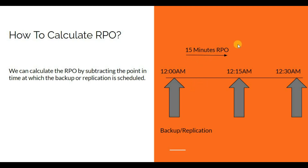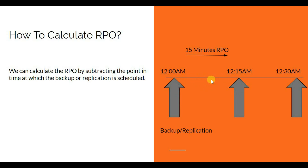In this scenario, 15 minutes is the RPO. What this means is that any data created within this 15-minute window that is lost and cannot be recovered is acceptable for the business. For example, if a backup happens at 12:00 AM and a disaster occurs at 12:10 AM, whatever data was created between 12:00 and 12:10 cannot be recovered, because the next backup happens at 12:15 AM. Any data lost within those 15 minutes is acceptable — that is the whole point of RPO.